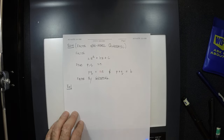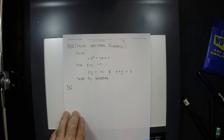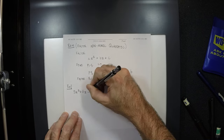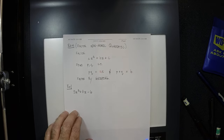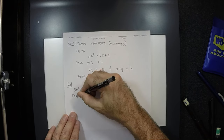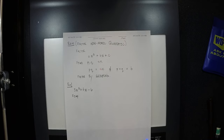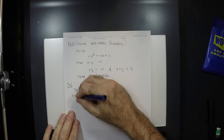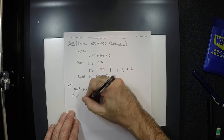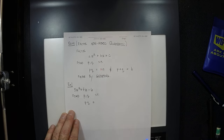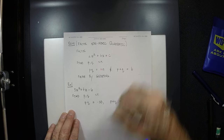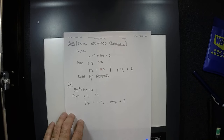For example, let's factor 5x squared plus 7x minus 6. We want to find two numbers. In this specific question, we want pq to be negative 30 — that's 5 times negative 6 — and we want p plus q to be 7. So we're looking for two numbers whose product is negative 30 and whose sum is 7.